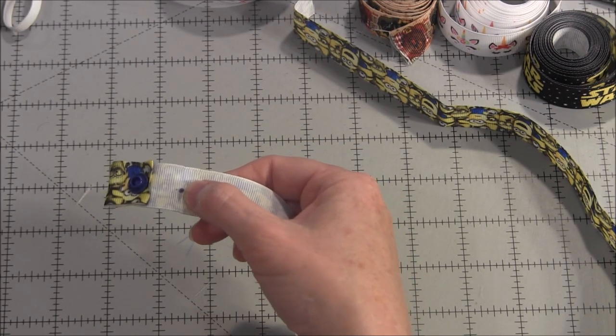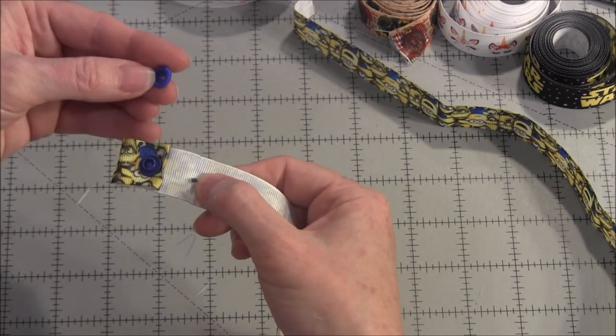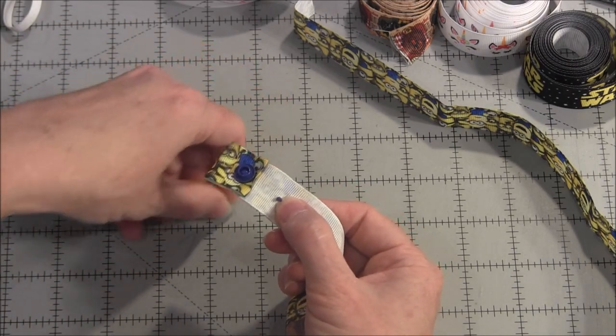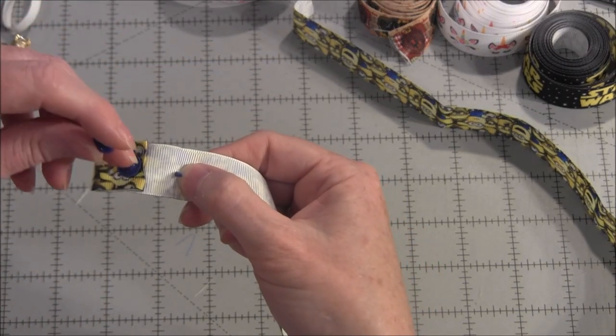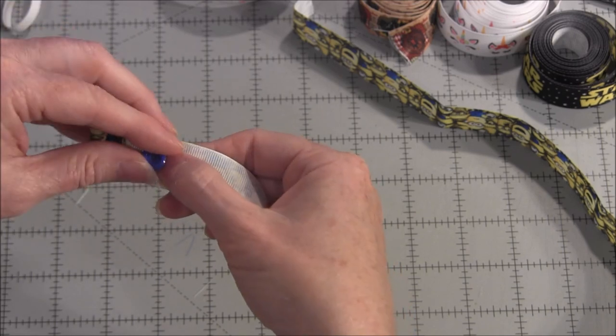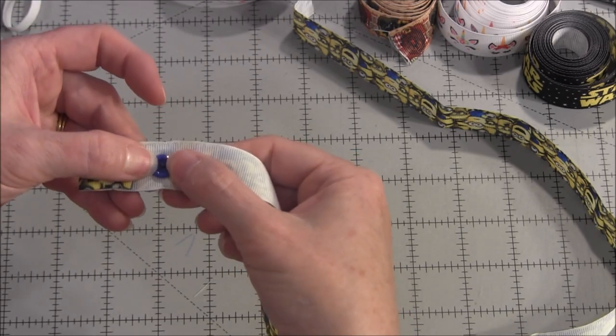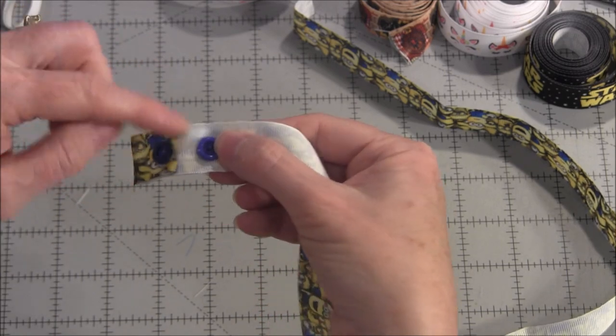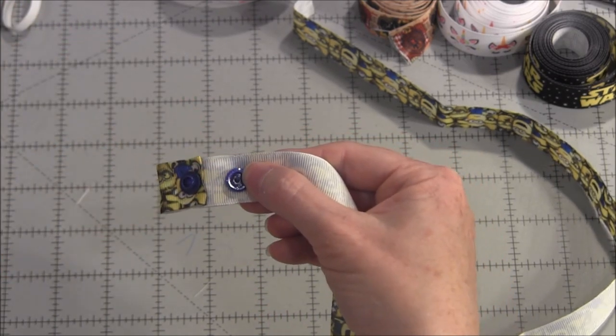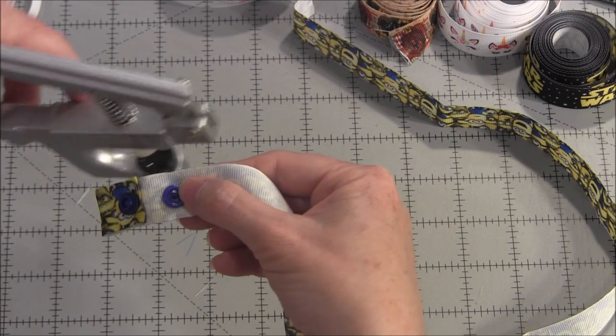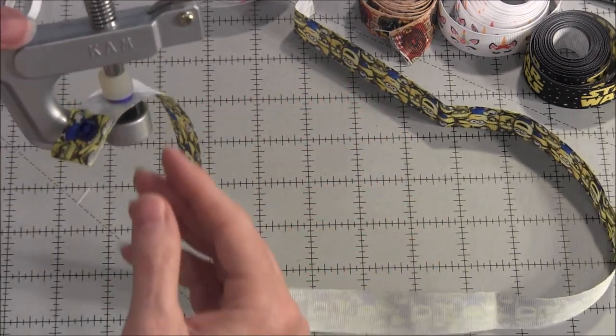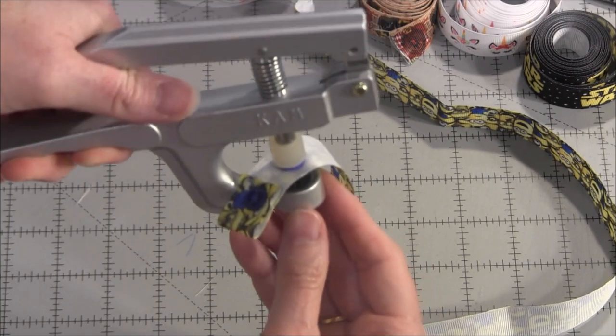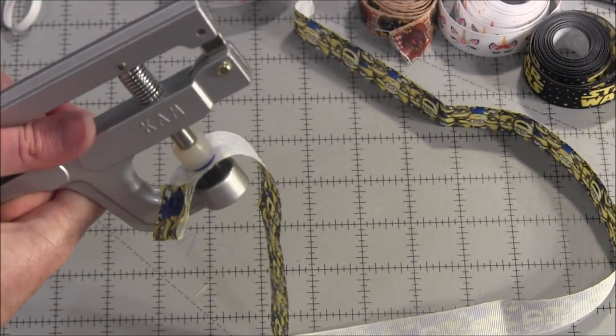Now remember, you have to match the other piece of the cam snap. If you use the male side first on this one, make sure you use the female side on the other side. Don't put the same one on both or your snap will not work. I'm going to slide it into my cam snap pliers and press down firmly.